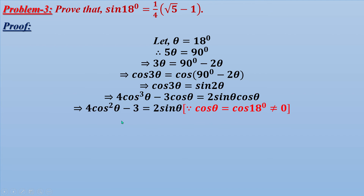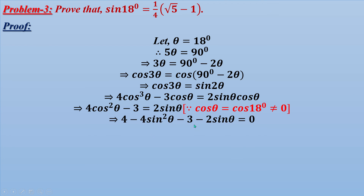We divide both sides by cosθ. Since cos18° ≠ 0, this is valid. So 4cos²θ - 3 = 2sinθ. Replacing cos²θ = 1 - sin²θ gives 4(1 - sin²θ) - 3 = 2sinθ, which simplifies to 4sin²θ + 2sinθ - 1 = 0, since 4 - 3 = 1.